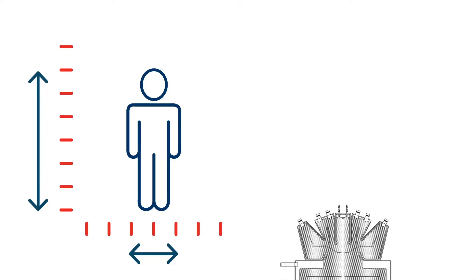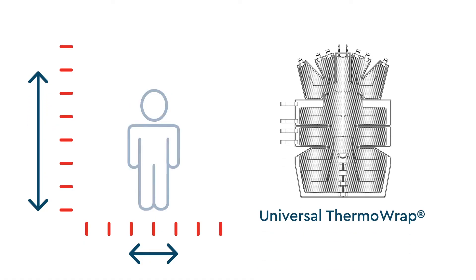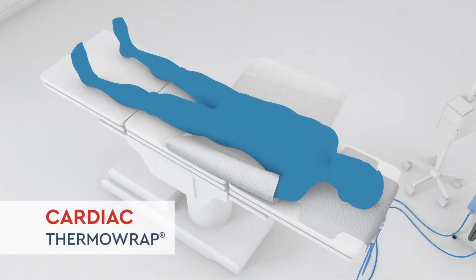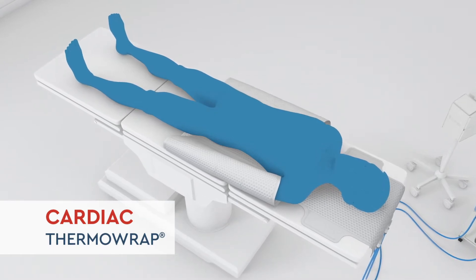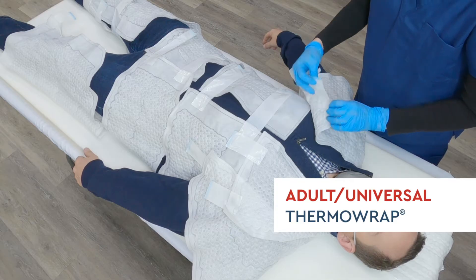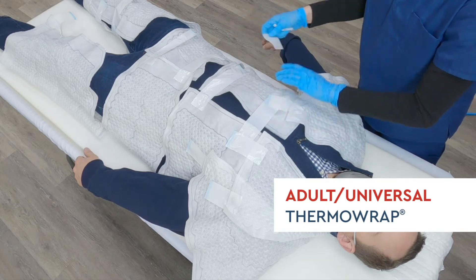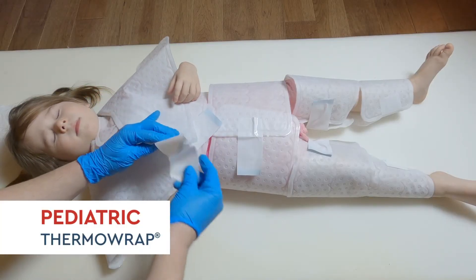Thermo-wrap is offered in multiple configurations to accommodate varied surgical procedures and patients of different sizes. The cardiac wrap provides surgical access to the entire torso, while adult and pediatric universal wraps provide more surface area coverage.